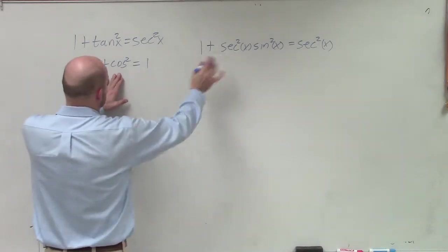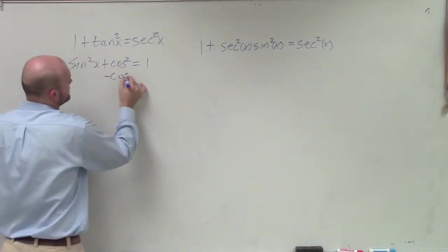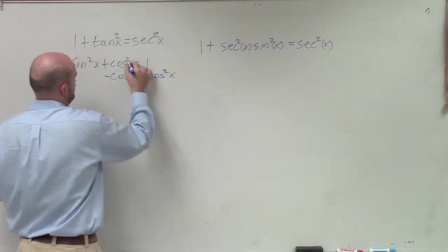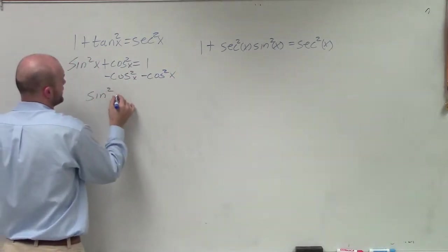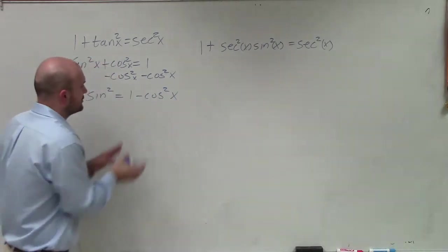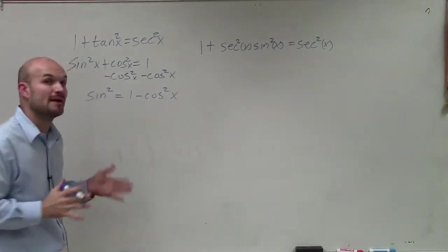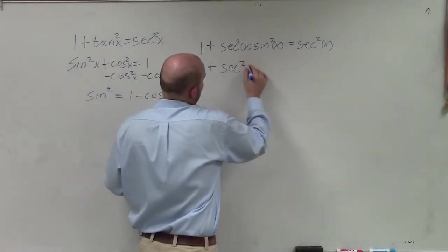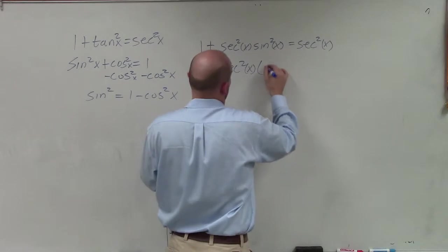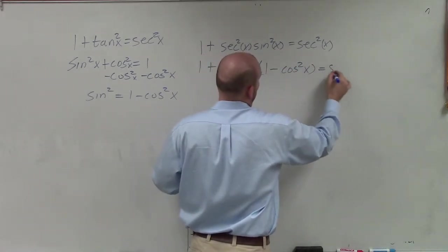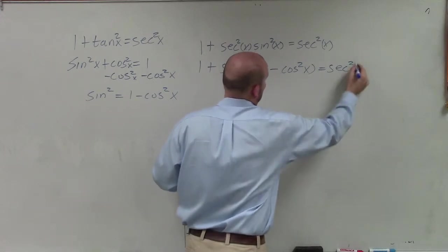So to solve this, for solved sine squared, I'm going to have to subtract a cosine squared on both sides. So therefore, I have sine squared equals 1 minus cosine squared of x. Now, what I'm going to do is substitute in 1 minus cosine squared of x. So I have 1 plus secant squared of x times 1 minus cosine squared of x equals secant squared of x.